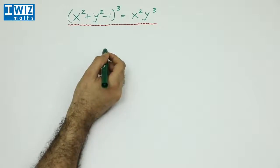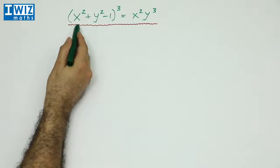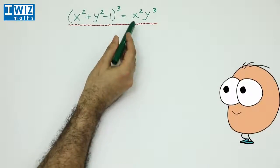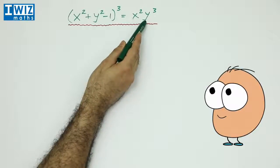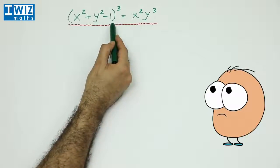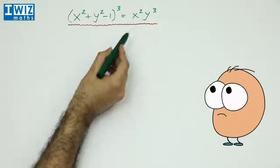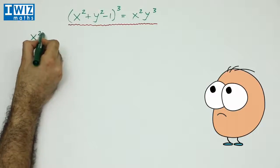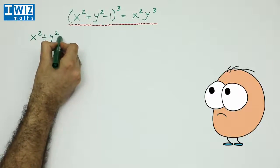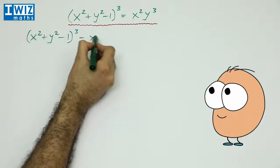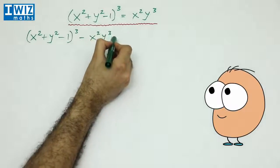We've got this slightly complicated looking equation and we need to make some sense of it. So on the left hand side here, we've got x square plus y square minus 1 whole cubed. And on the right hand side here, we've got x square times y cubed. So the first thing we can do is take this expression here and put it on the left hand side.